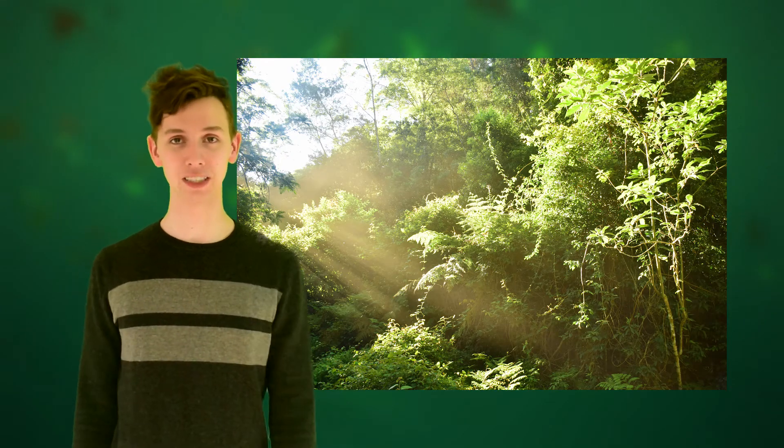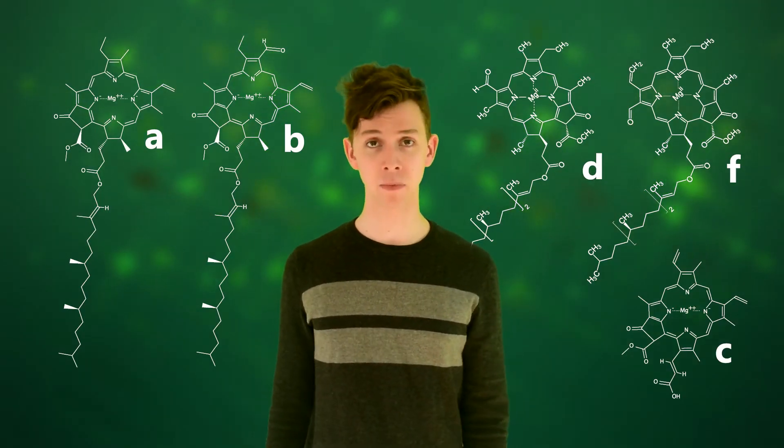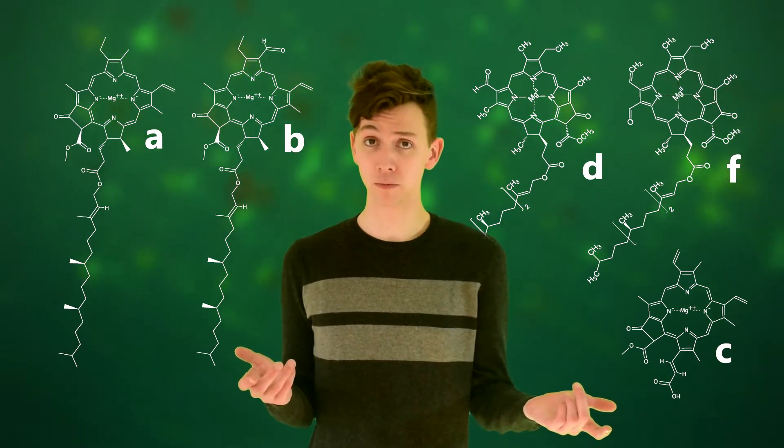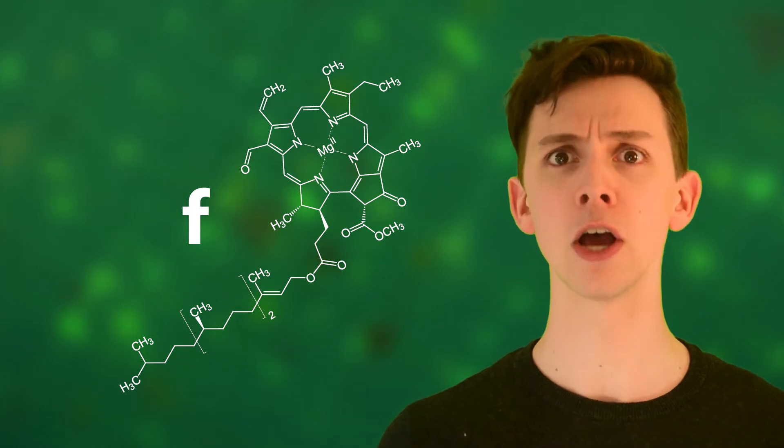Chlorophyll is what gives plants their green color and allows them to use sunlight to grow. But plants aren't the only organisms that use chlorophyll, and there isn't just one kind of chlorophyll out there. What makes these molecules so special? And why are scientists so excited about the most recently discovered chlorophyll, chlorophyll F?